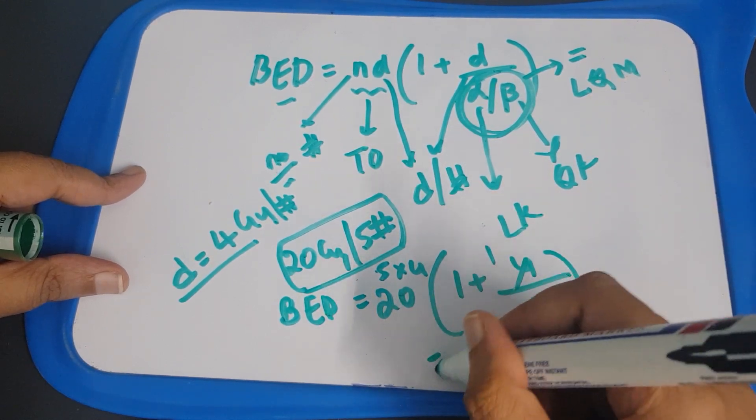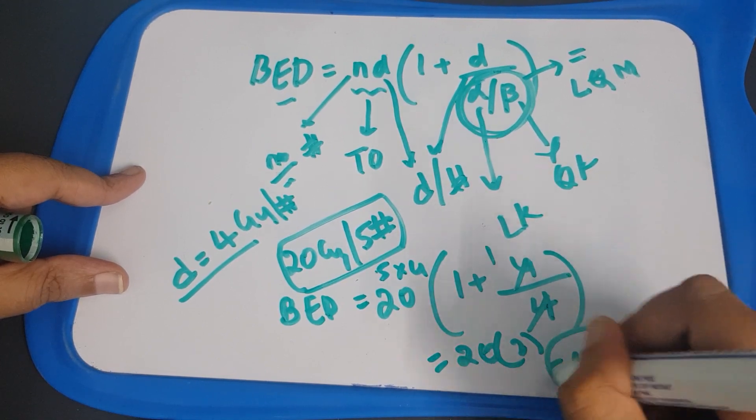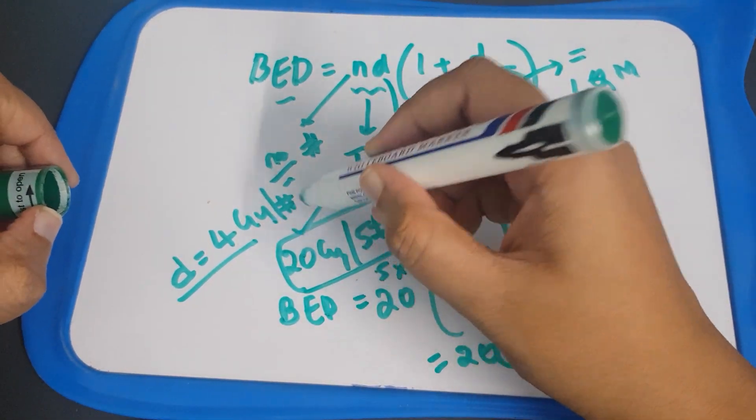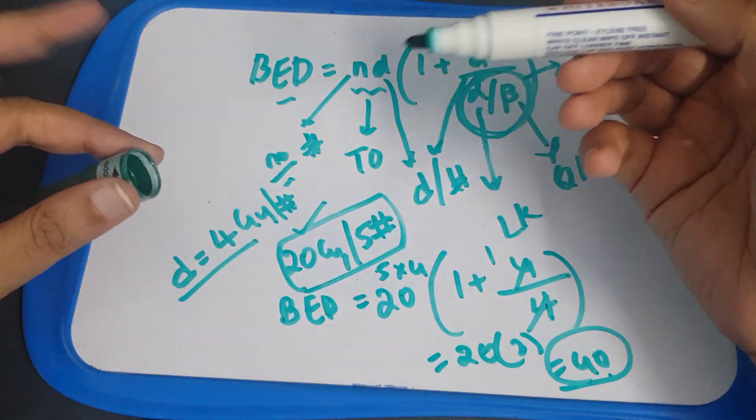It's 20 into 2, so 40 is the biological effectiveness. Even though you are giving 20 gray, biologically 40 gray is being effective in this patient.